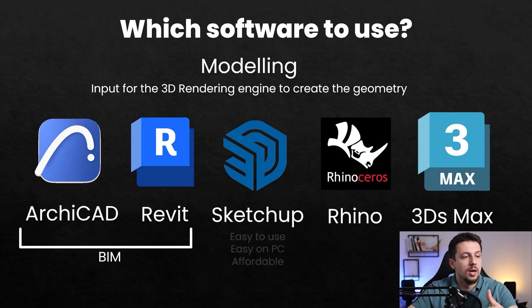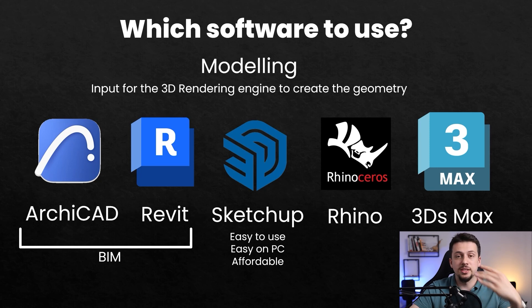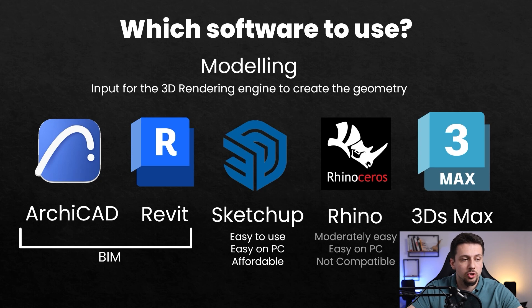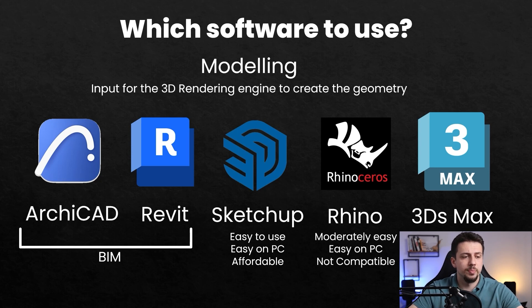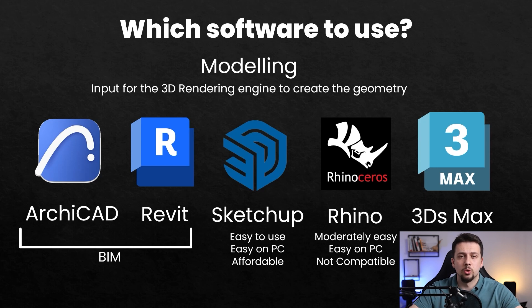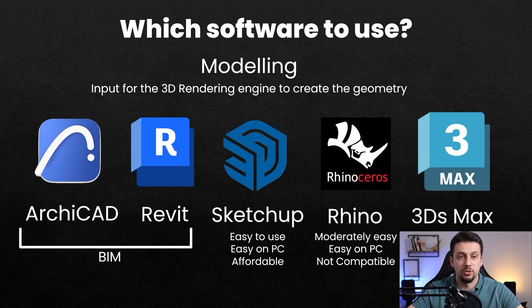Then you have SketchUp, which is easy to use, easy on your PC, and very affordable. Rhino is moderately easy depending on what you want to create with it, and it's also easier on your PC, but it's not too compatible with a lot of rendering engines. And also 3ds Max, which is very hard to learn for beginners — it needs an expensive PC to run smoothly and can be really slow with rendering engines.